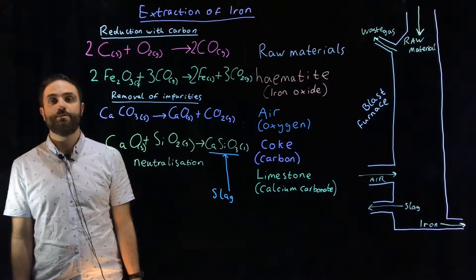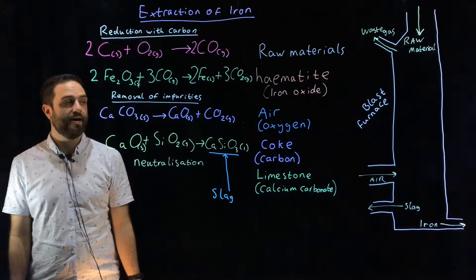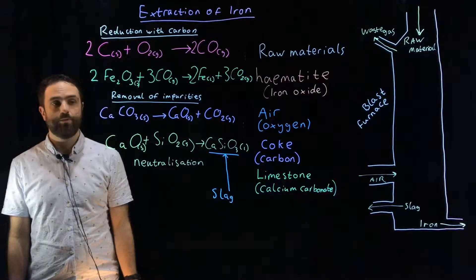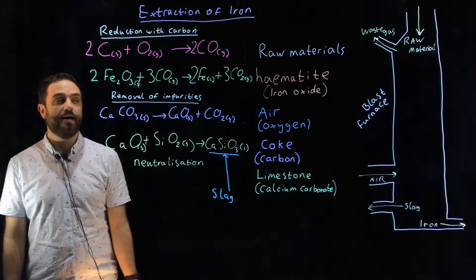So we can perform a displacement reaction in order to reduce the iron, get rid of the oxygen, reduce the iron oxide and leave us with liquid iron which we can then cool down and use for whatever we want.